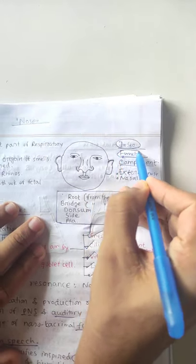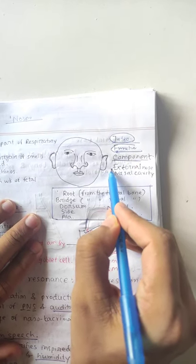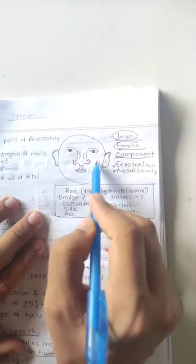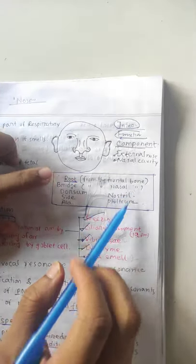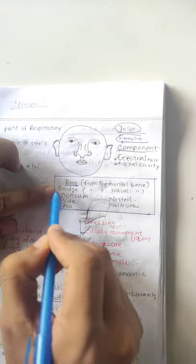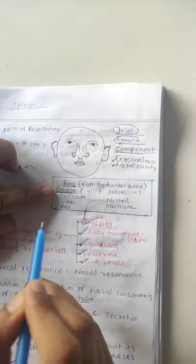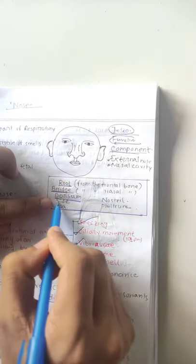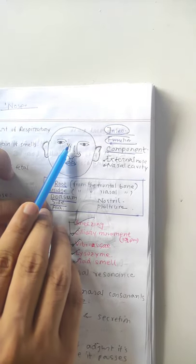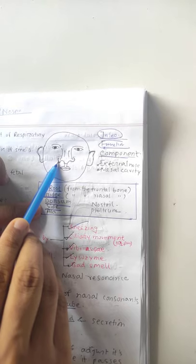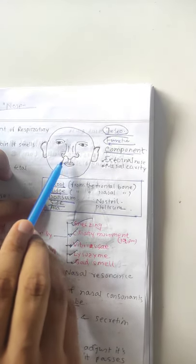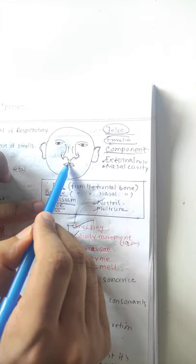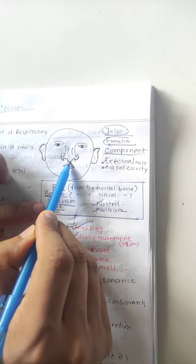So this is the nose function. The components are two: one is the external nose and the nasal cavity. The external nose is a pyramidal structure. What are the parts? One is the root, which is from the frontal bone. The bridge is the middle or center. Then there is the tip, the ala, and the nostrils. On the sides are the philtrum and the columella.